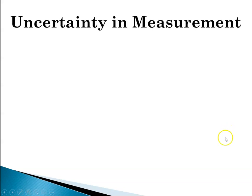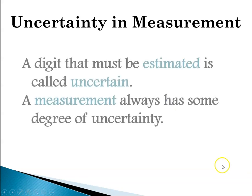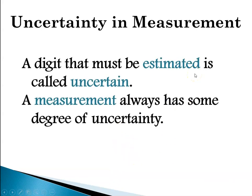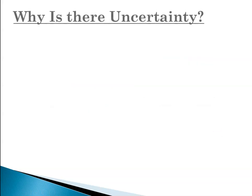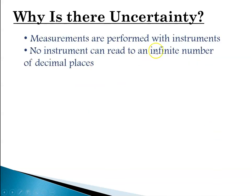That leads to another concept: uncertainty in measurements. There's always a digit that must be estimated, and that digit is called uncertain. Every measurement always has some degree of uncertainty because measurements are performed with instruments, and no instrument can read to an infinite number of decimal places. The uncertainty gives you some idea of what kind of instrument was used to make the measurement.